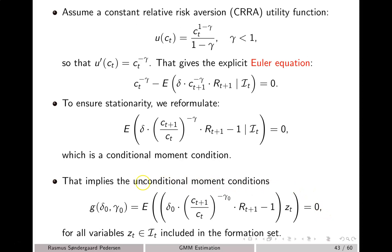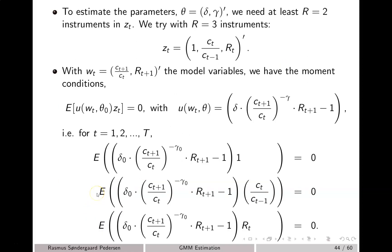Our unconditional moment conditions are given by this formula, and we have this function g of the model parameters. Note that we have two parameters to estimate, so we need at least two moment conditions. We start out by considering the case where we have three instruments and hence three moment conditions. We choose Zt to include a constant, the lag growth in consumption, and the lag return factor on financial wealth. So Zt is three-dimensional, and the model variables Wt are given by the growth rate in consumption and the return factor at time t plus 1.